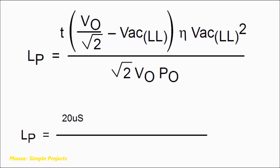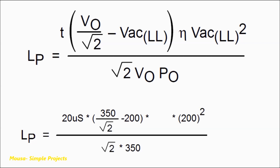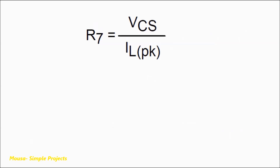The next formula is used for calculating the inductance. T according to the datasheet equals 20 microseconds, the output voltage I need is 350 volts, the low-line voltage is 200 volts, and the output power is 15 watts, so the inductance should be 4.7 millihenry.